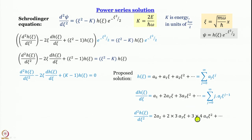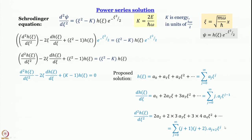Writing d²h/dξ² as a summation from j=0 to infinity, we get: Σ (j+1)(j+2)·aⱼ₊₂·ξʲ. To verify: for j=0, the first term is 1×2·a₂, which is 2a₂ — matching what we computed. For j=2, the term is 3×4·a₄·ξ², which also checks out.